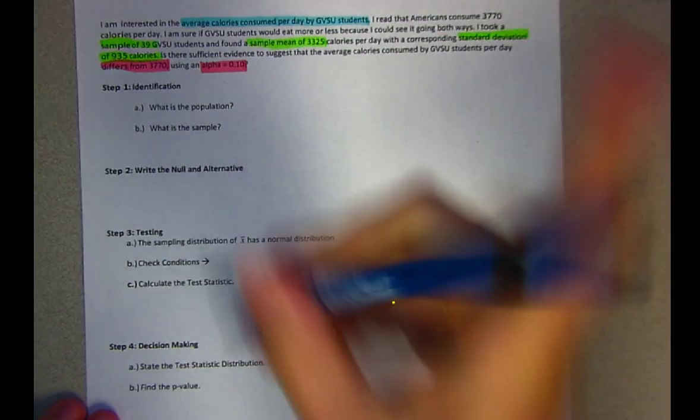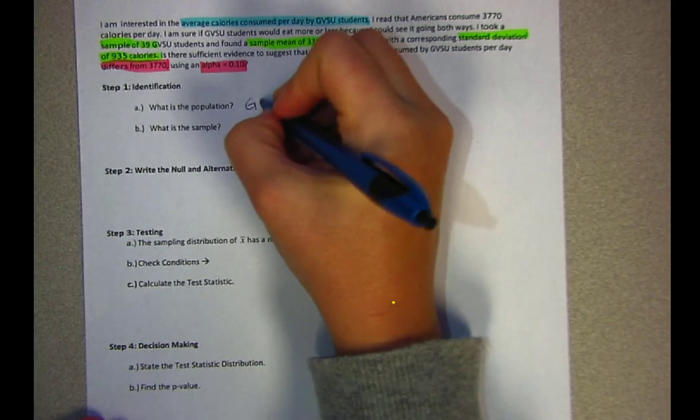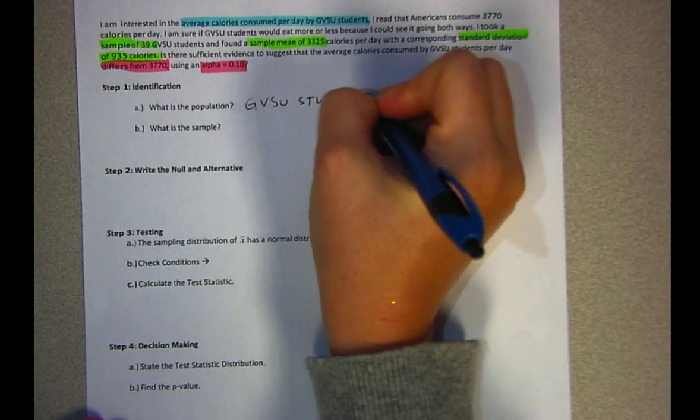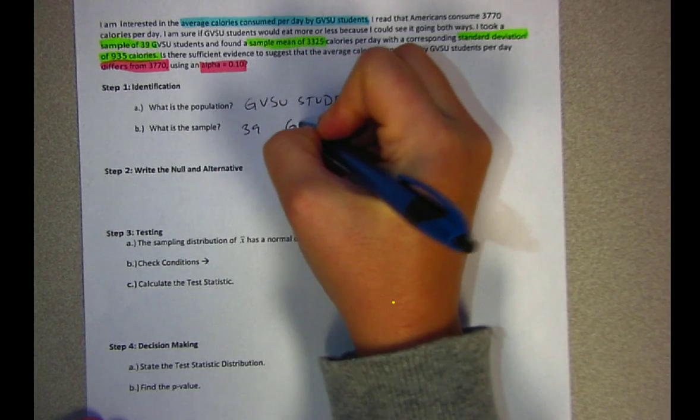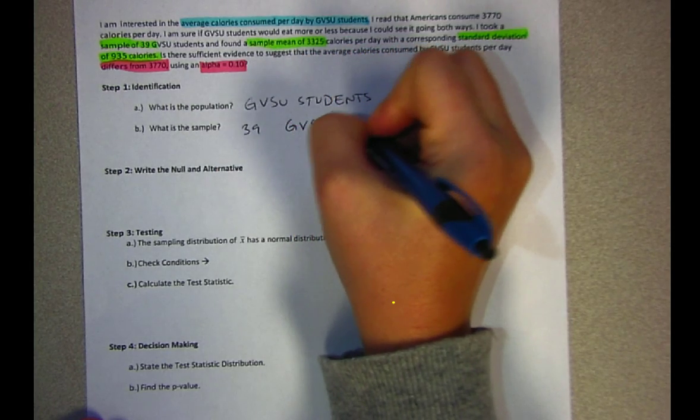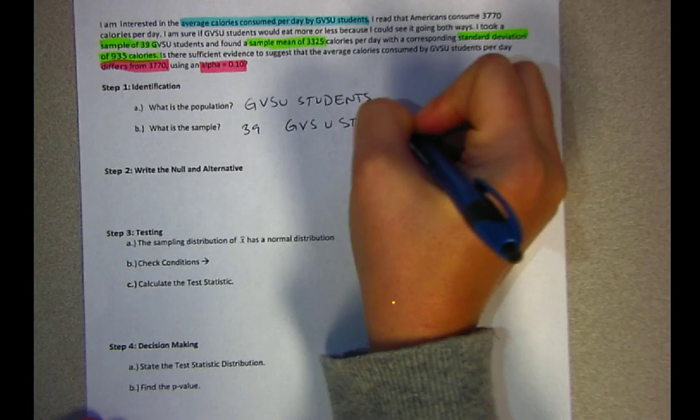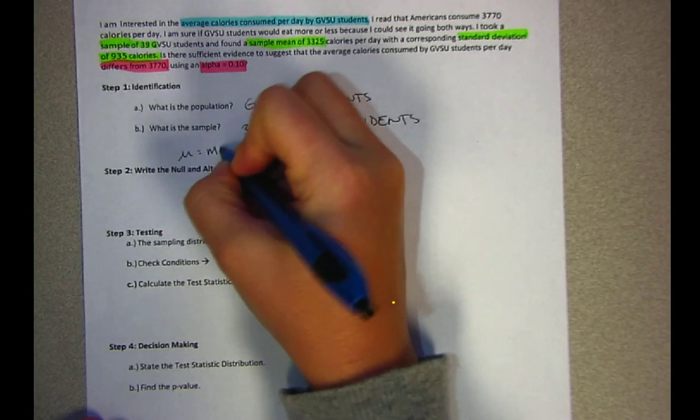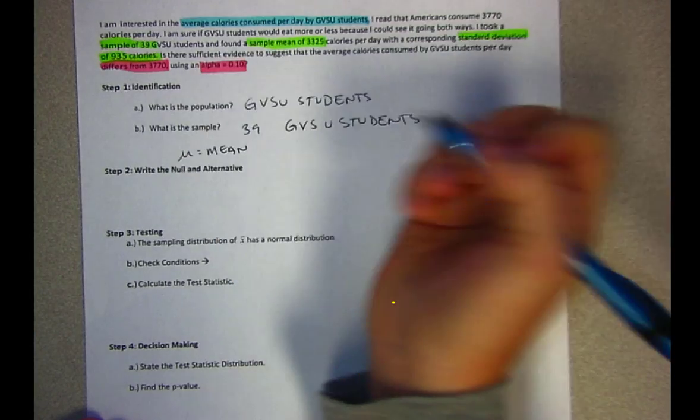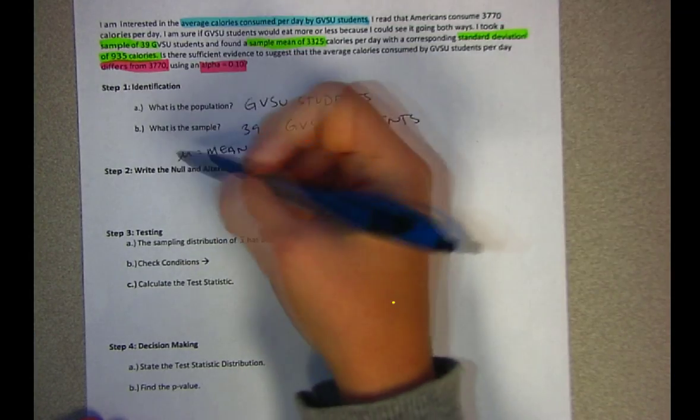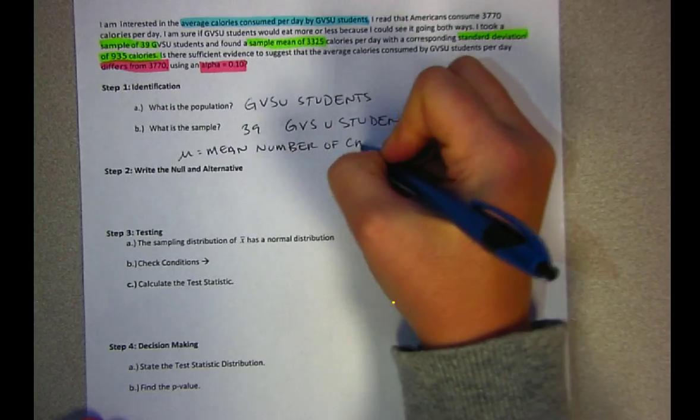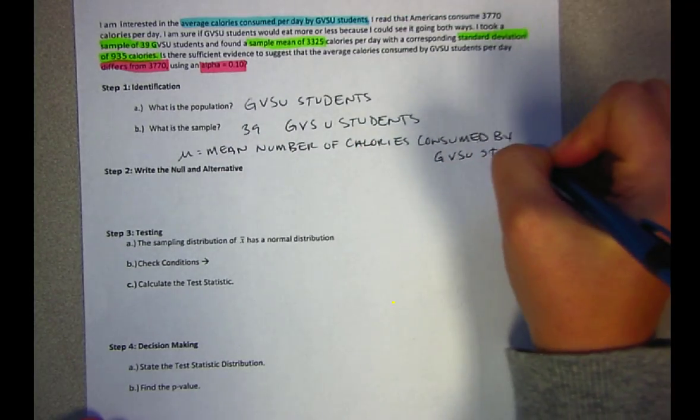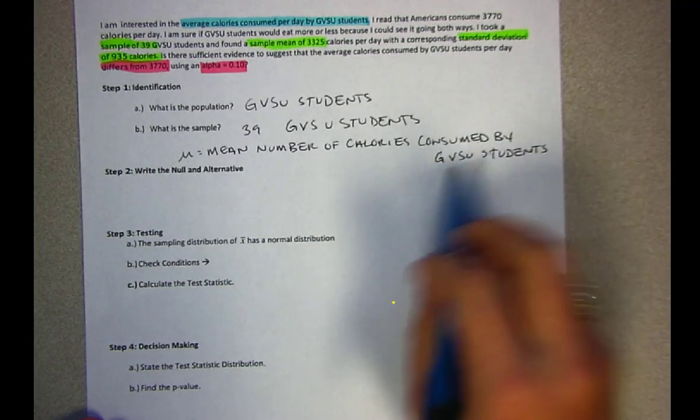Now defining the population we have GVSU students. My sample is 39 GVSU students. To make it easier when I write my conclusion in step 5, I'm going to define my parameters. We have mu equals mean number of calories consumed by GVSU students.